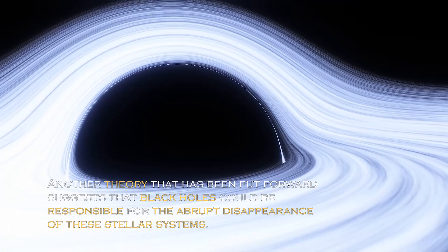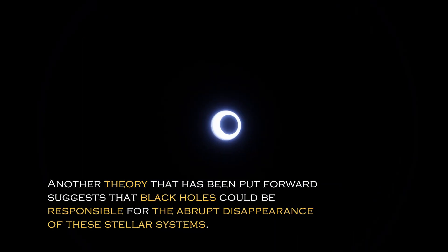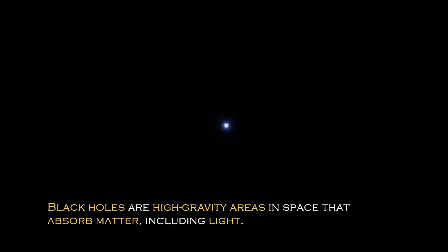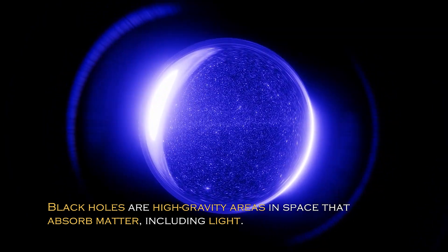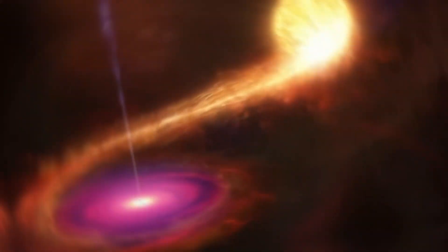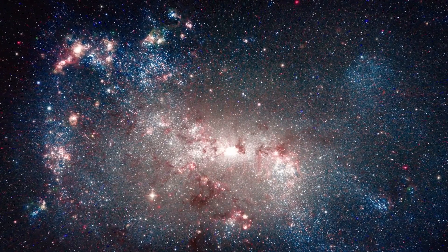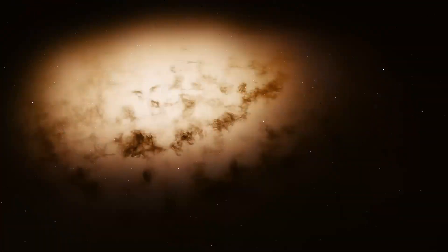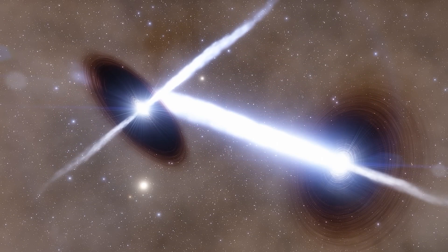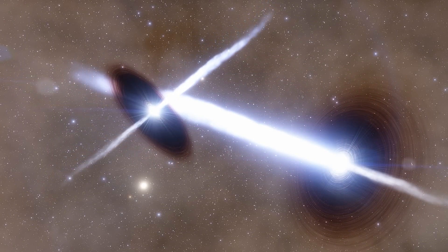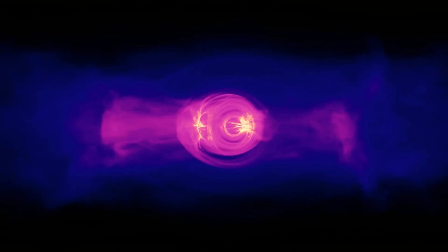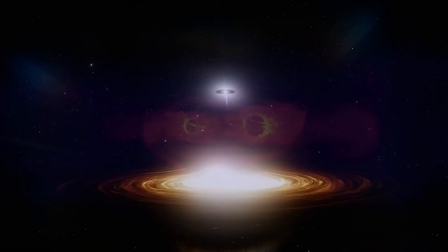Another theory that has been put forward suggests that black holes could be responsible for the abrupt disappearance of these stellar systems. Black holes are high-gravity areas in space that absorb matter, including light, and sometimes consume entire stars. However, the theory of black holes as the cause of the massive disappearance of trillions of stars seems unlikely. It would require an excessive number of black holes to eliminate such a huge number of stars, which does not seem logical or consistent with what we know about these astronomical phenomena.